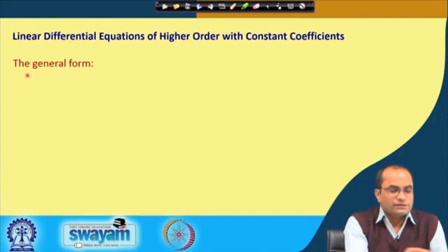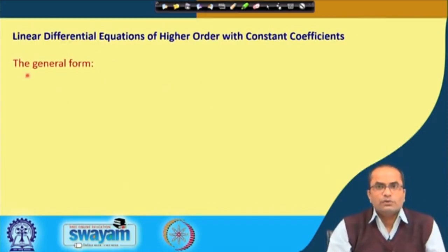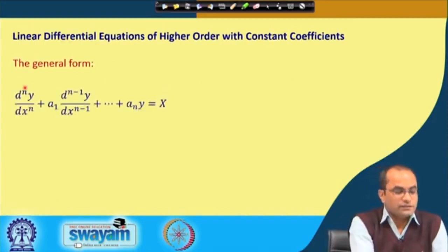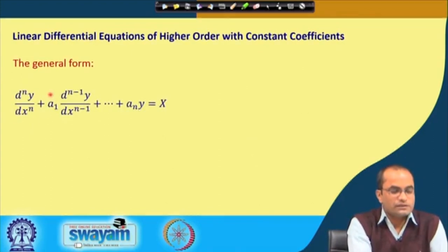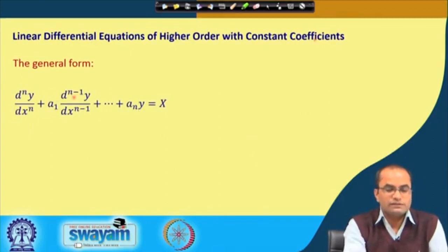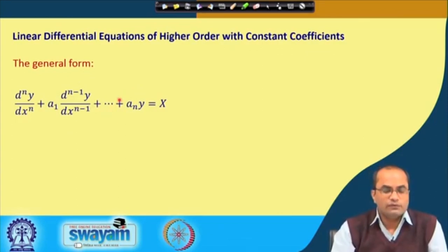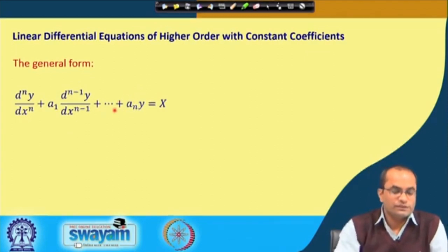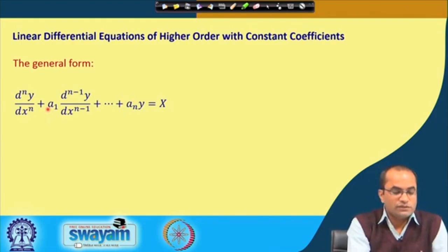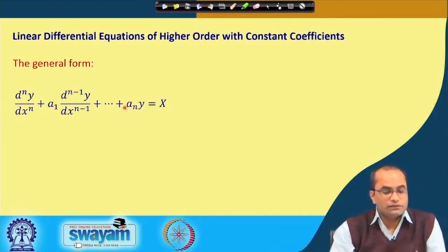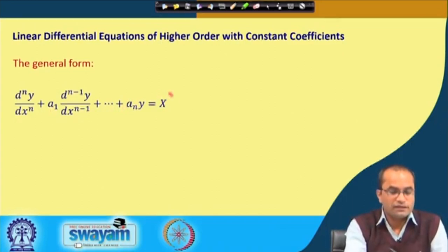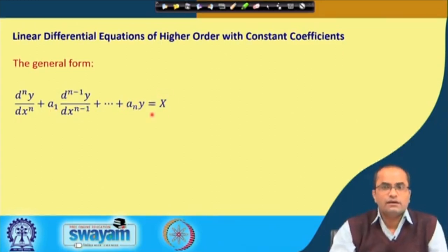The general form of such differential equations is: the nth derivative of y, plus a₁ times the (n−1)th derivative of y, continuing up to the y term with constant coefficient aₙ, equals a function x on the right-hand side. The coefficients a₁, a₂, a₃, …, aₙ are constants, and the right-hand side x can be a function of x.